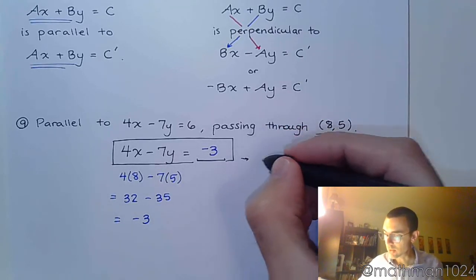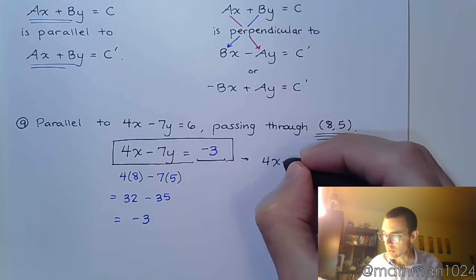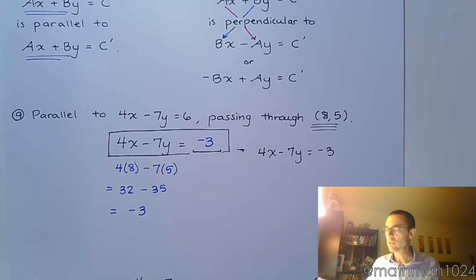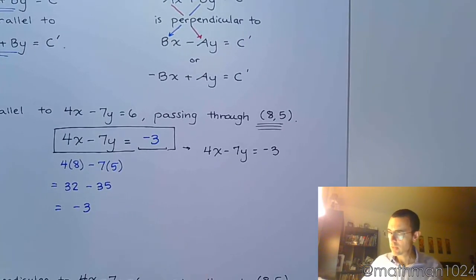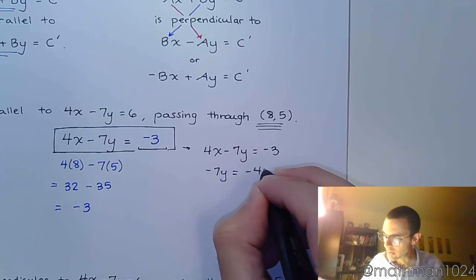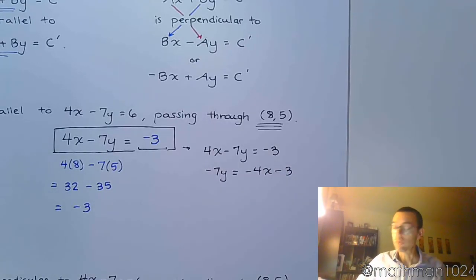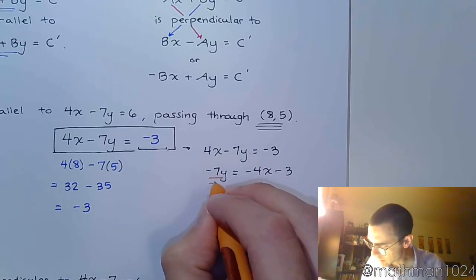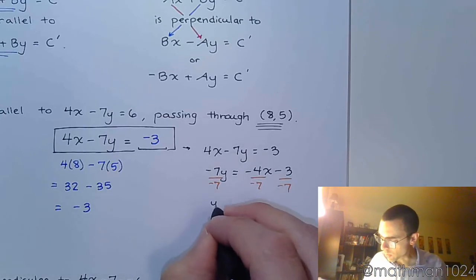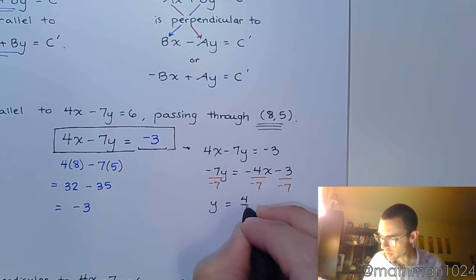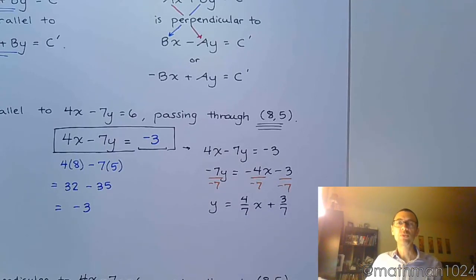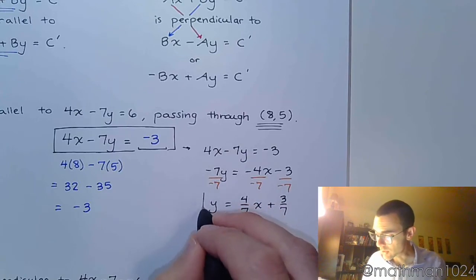And then convert this to slope-intercept form. And you know how to do that. All you have to do is move the 4x to the other side. So negative 7y equals negative 4x minus 3. Divide everything by this coefficient. And so we get y is equal to 4 sevenths x plus 3 sevenths. So this would be your answer in slope-intercept form.